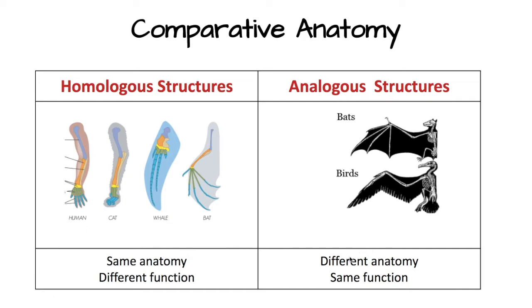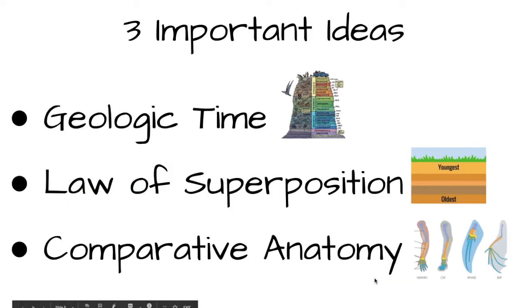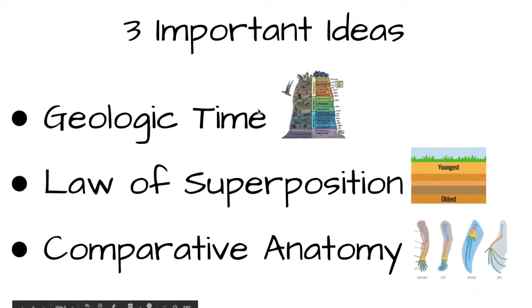And analogous structures — these have different anatomy, notice the bones here are very different, but the same function. So to summarize, our three important ideas are geologic time, law of superposition, and comparative anatomy.